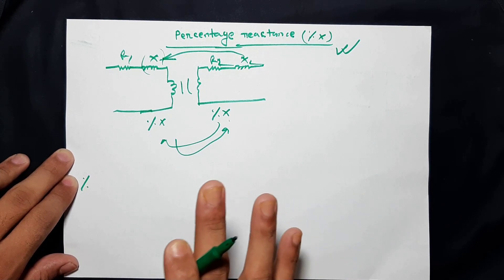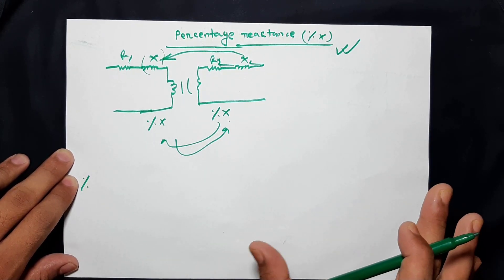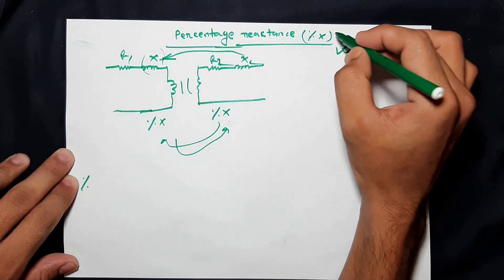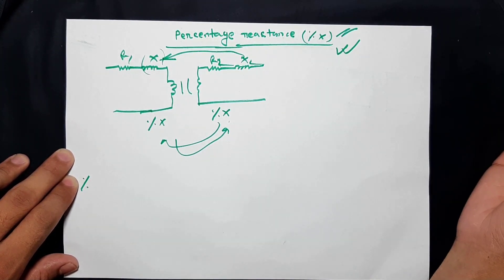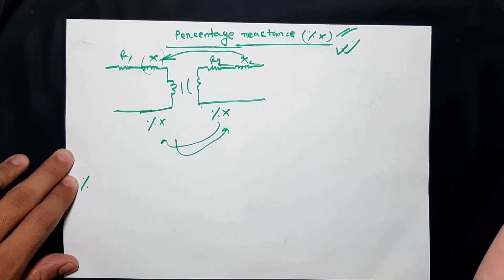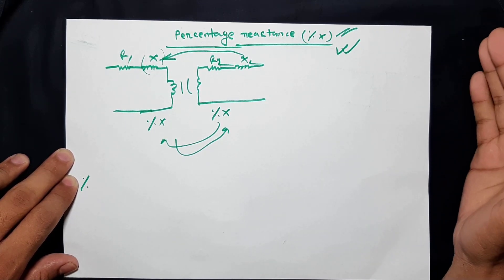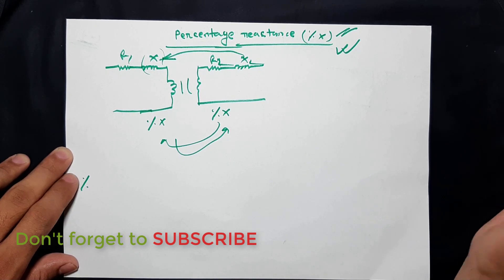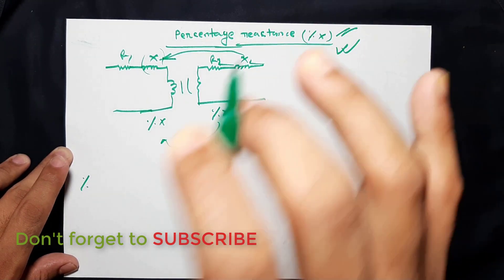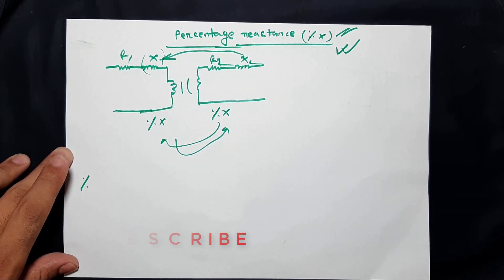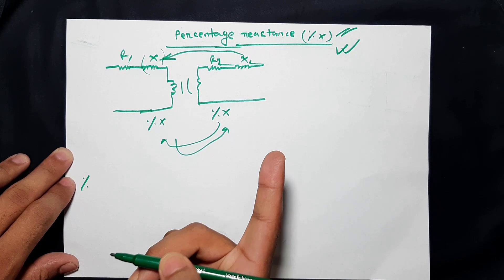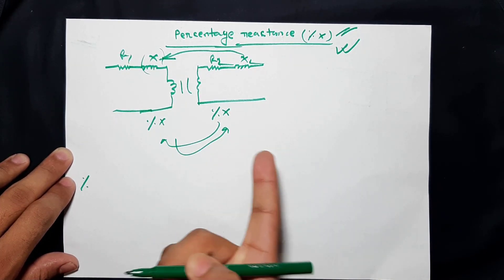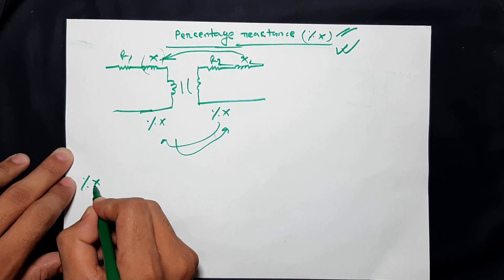The resistance is used in the calculation, and the resistance is expressed as a percentage. Now at this time, we see the resistance relative to the reactance. There is a percentage of the reactions, so this is the concept for the next problem solving. We can see the percentage reactance calculation.